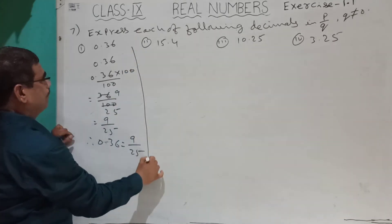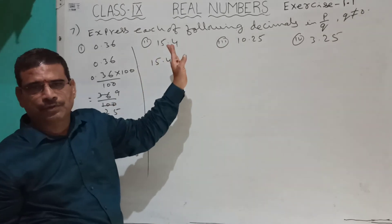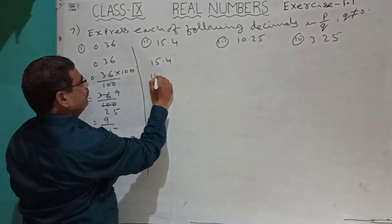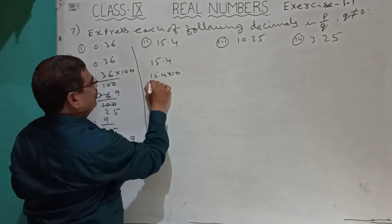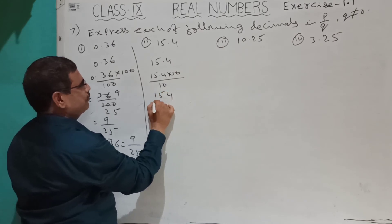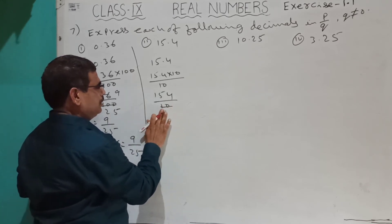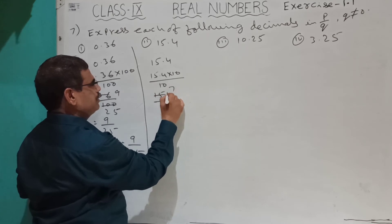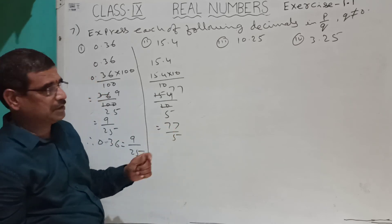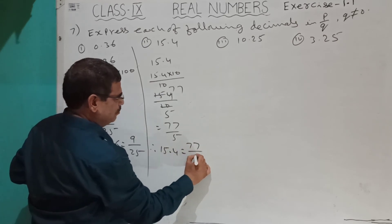For 15.4, multiply and divide by 10: 15.4 into 10 by 10 gives 154 by 10. Simplify by dividing by 2: 77 by 5. Therefore 15.4 equals 77 by 5.